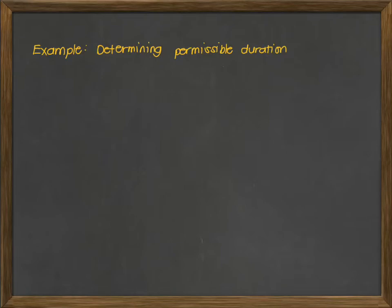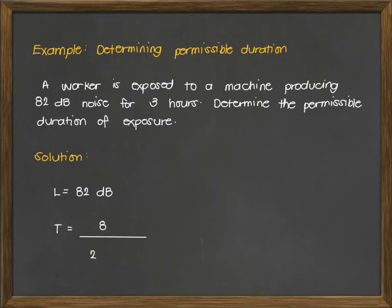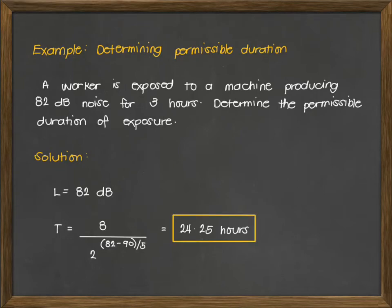For our example in determining permissible duration: a worker is exposed to a machine producing 82 decibel noise for 3 hours. Determine the permissible duration of exposure. We are given L = 82 decibels. T is computed using the formula: 8 over 2 raised to the exponent (82 minus 90) divided by 5. This gives us an answer of 24.25 hours, which is the maximum time allowed for a worker to be exposed to a noise of 82 decibels.